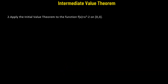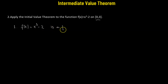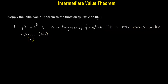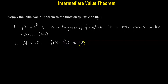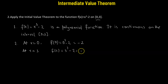So we need to apply the intermediate value theorem to the function given by x cubed minus 2 on the interval 0 to 3. Let's first check this particular function, f of x equals to x cubed minus 2. Since it is a polynomial function, it is continuous on the interval 0 to 3. Next, we calculate the value of the function at the boundary points. At x equals to 0, f of 0 is 0 cubed minus 2, which gives us the value negative 2. And at x equals to 3, f of 3 equals 3 cubed minus 2. So 3 cubed is 27, and 27 minus 2 will be positive 25. So here also, we observe that f of 0 is not equal to f of 3.